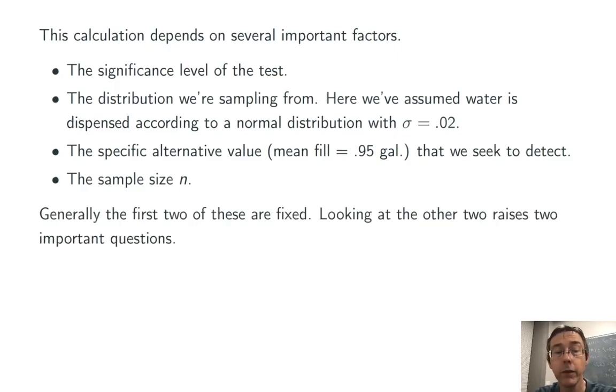Now, the first two of these are generally fixed. We are going to pick a significance level at the beginning of the discussion and then leave it alone. Typically 0.05. Sometimes there are other values that are used, but they're always fixed throughout the problem. Secondly was the distribution we're sampling from. We don't have any control over that. In this case, we knew it was normal. We knew the standard deviation. So really, it's the last two that are probably the most interesting here.